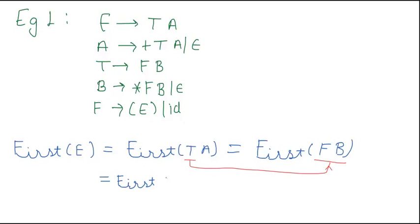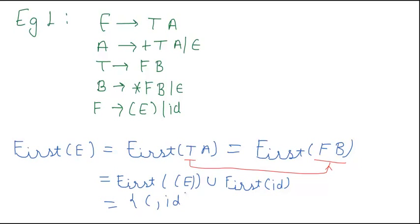So we will have First(E) equal to bracket open, comma, id. First(A) would be equal to First(+TA) union First(epsilon).